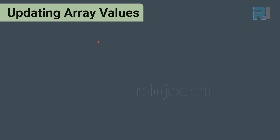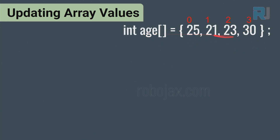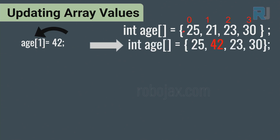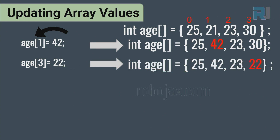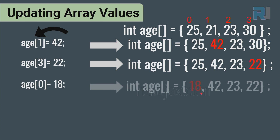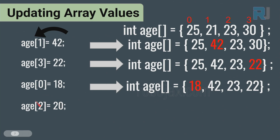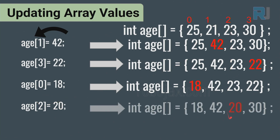How can we update the value of an array? We use the same syntax: age[1] = newValue. So age[1] = 42 changes 21 to 42. Similarly, age[3] = 22 changes that element to 22, age[0] = 18 updates the first element to 18, and age[2] = 20 updates the third element to 20.